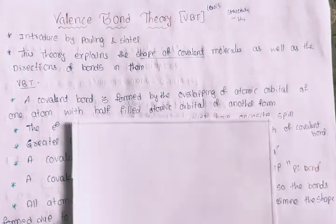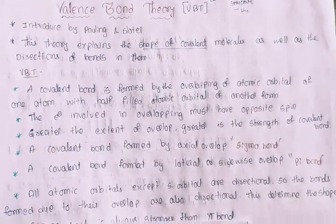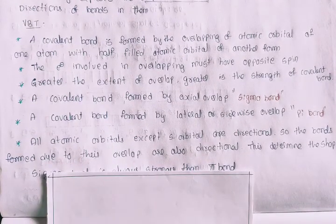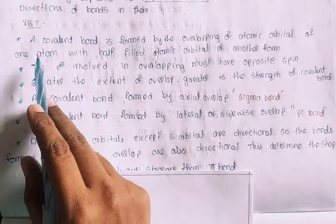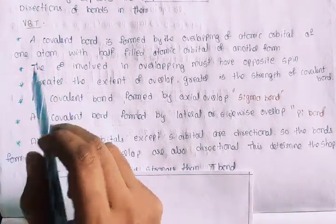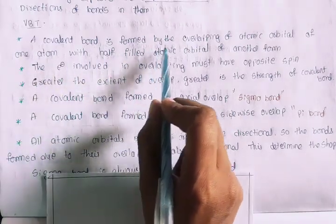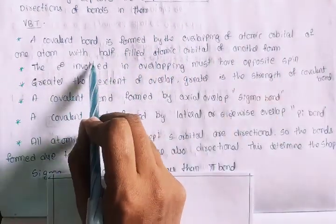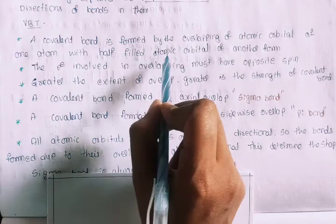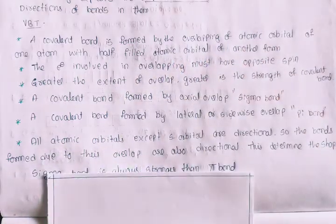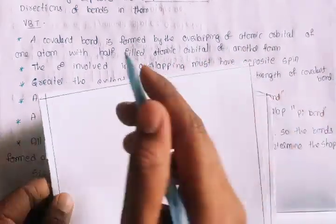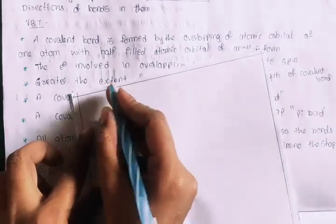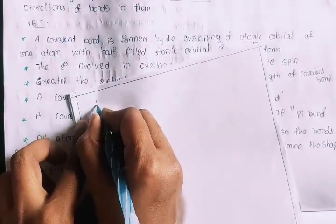First of all, the postulates one by one. Valence bond theory: a covalent bond is formed by the overlapping of the atomic orbital of one atom with a half-filled atomic orbital of another atom. Overlapping of atomic orbitals — for example, the hydrogen atom.